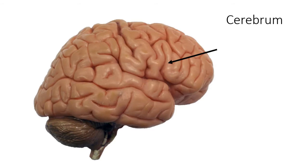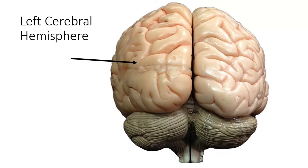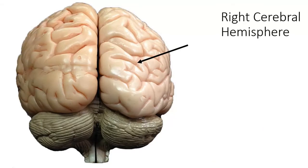Our cerebrum has two halves to it. This is the posterior view of the brain — we're standing behind the brain. What's indicated here on the screen is the left cerebral hemisphere. You need to be specific about that. And then on the other side, we'll have the right cerebral hemisphere.